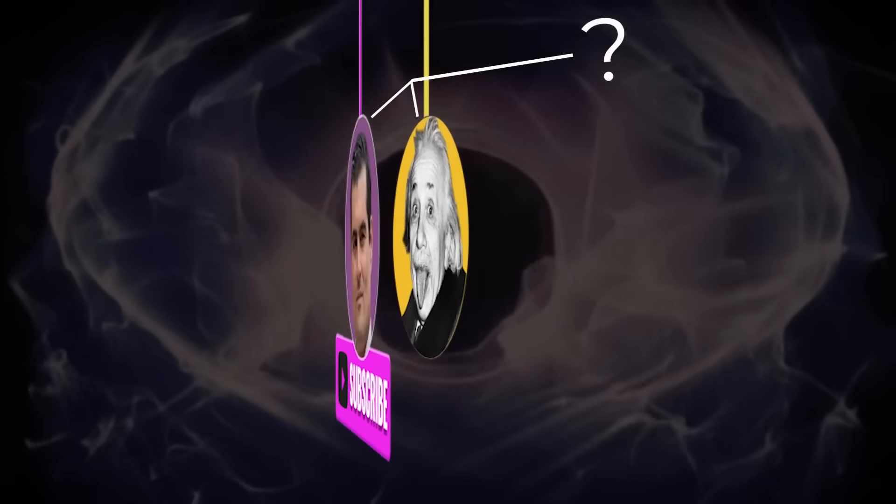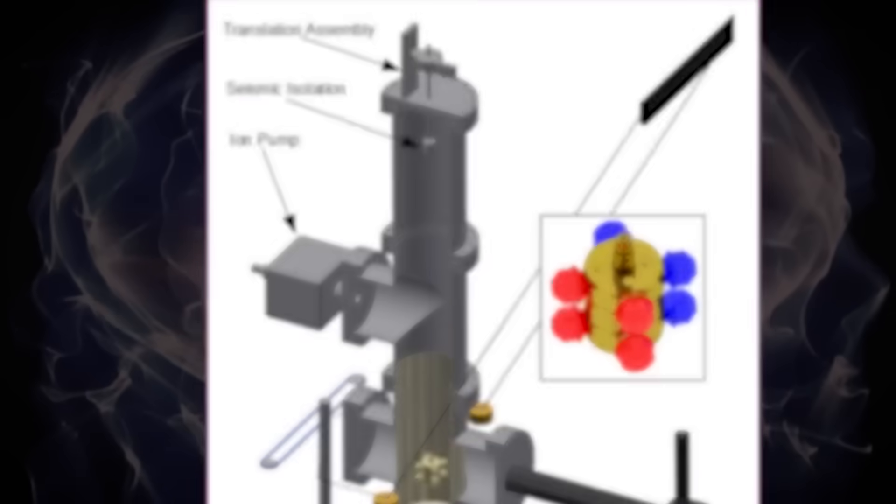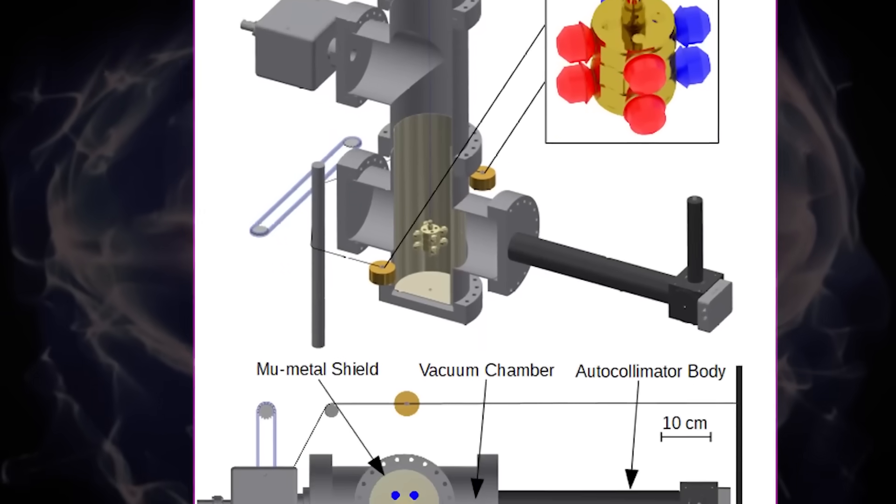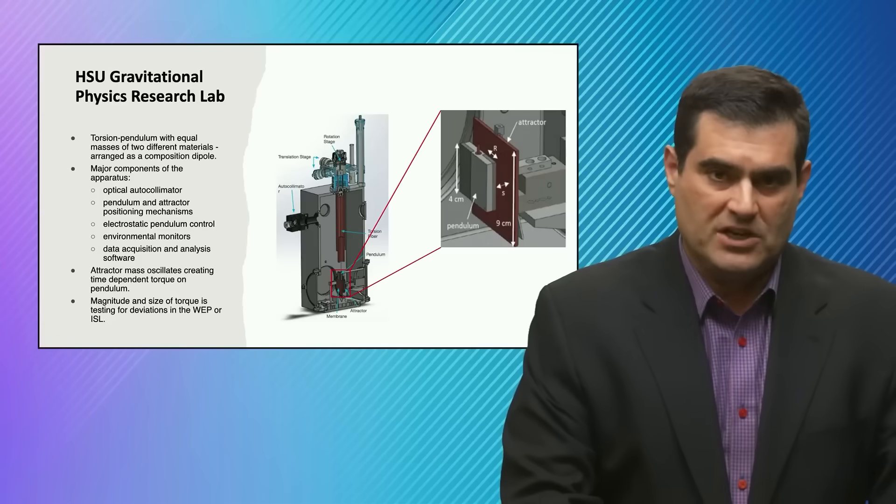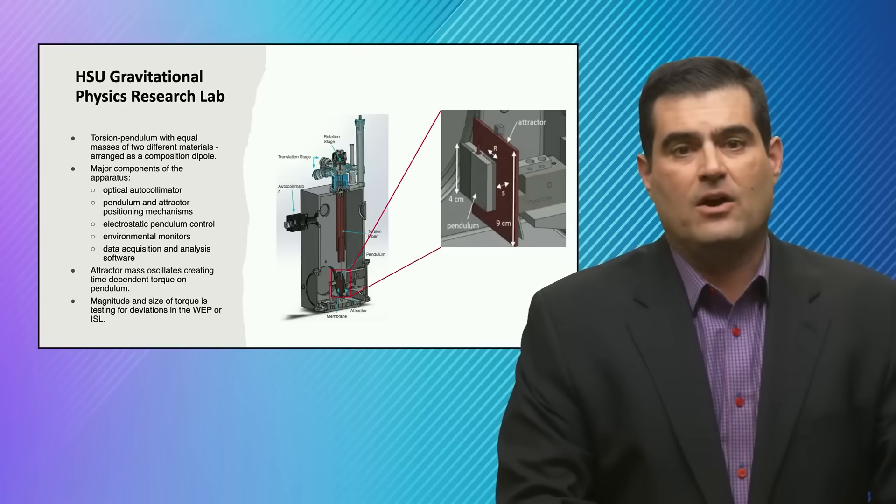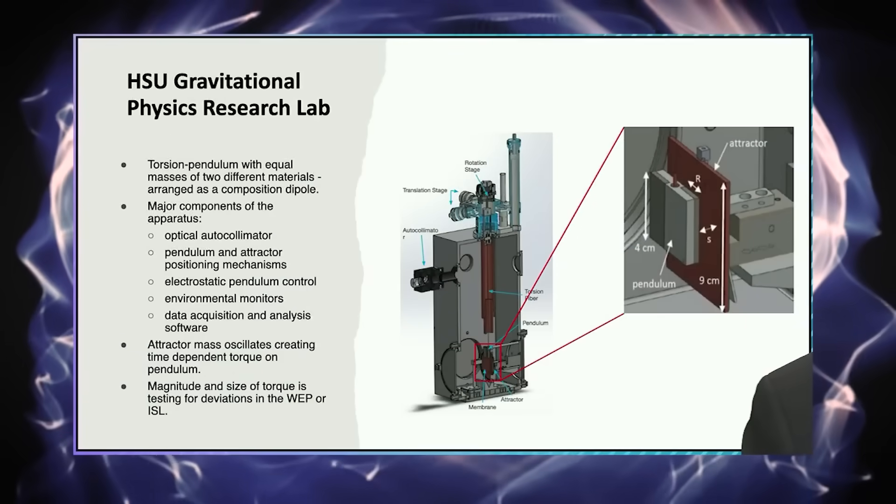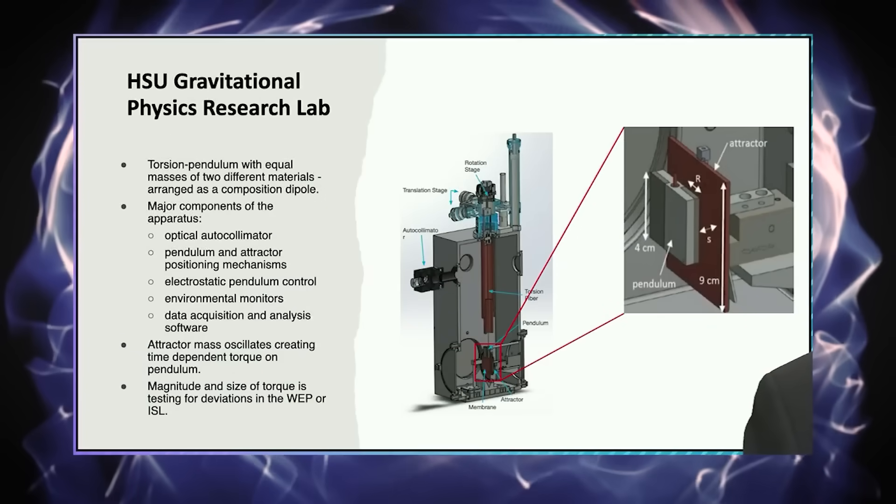They've got a torsion pendulum with equal masses—two plates separated by some distance—and this makes what's called a composition dipole. You could do with similar materials or different materials. The actual foundation of this experiment goes back to Cavendish in the 1700s.